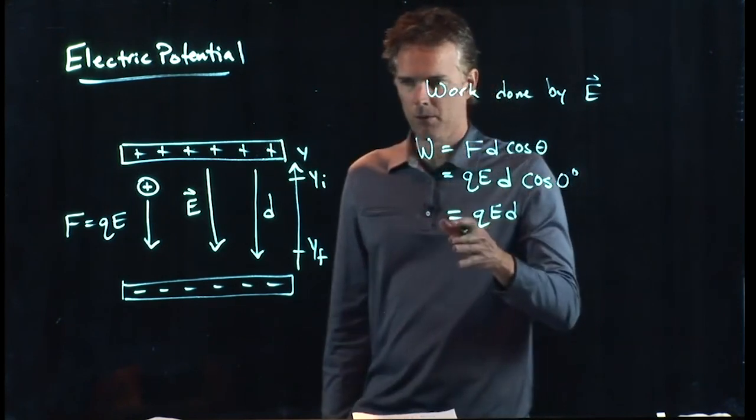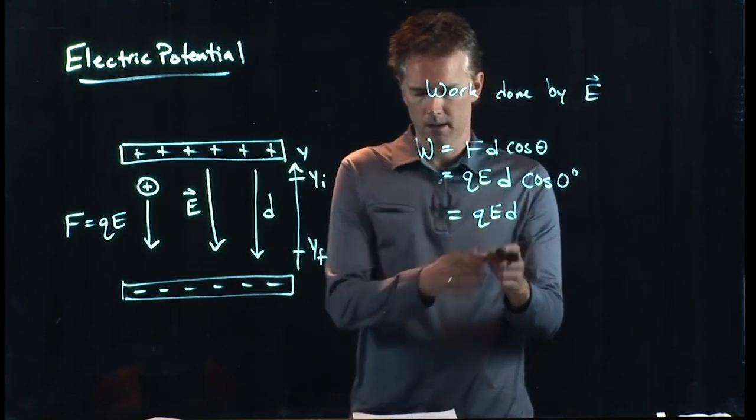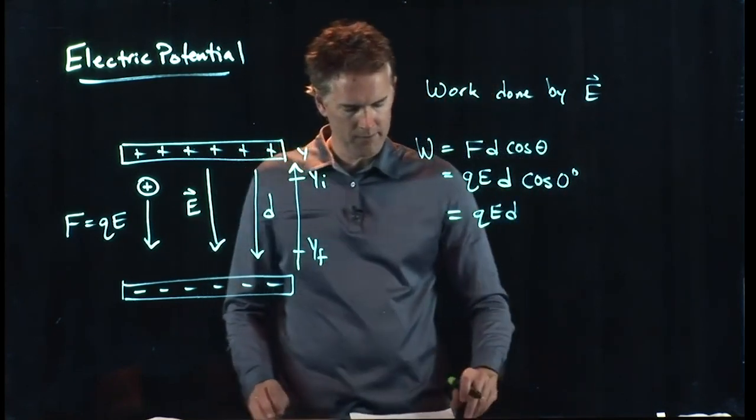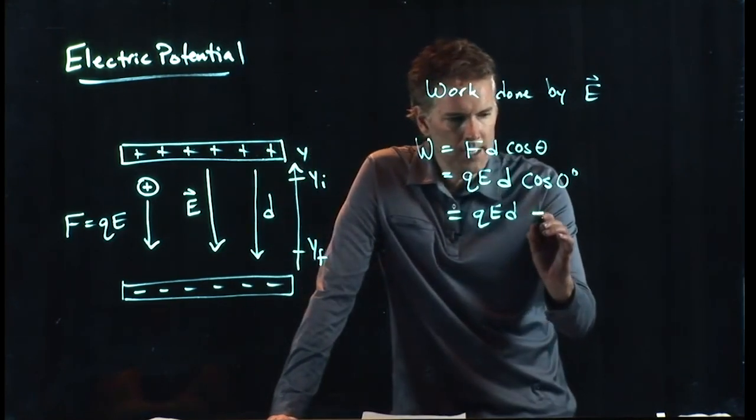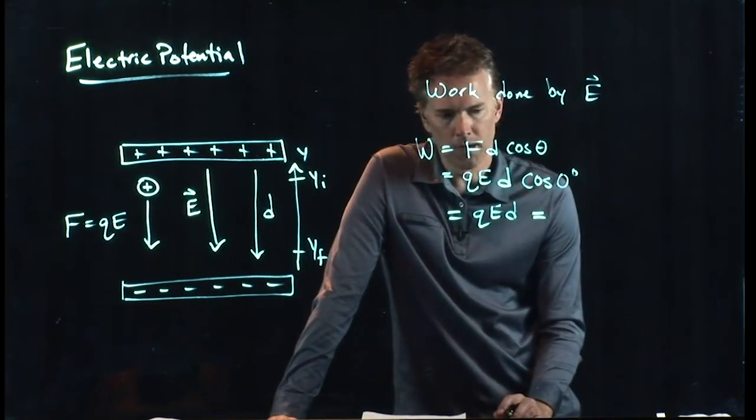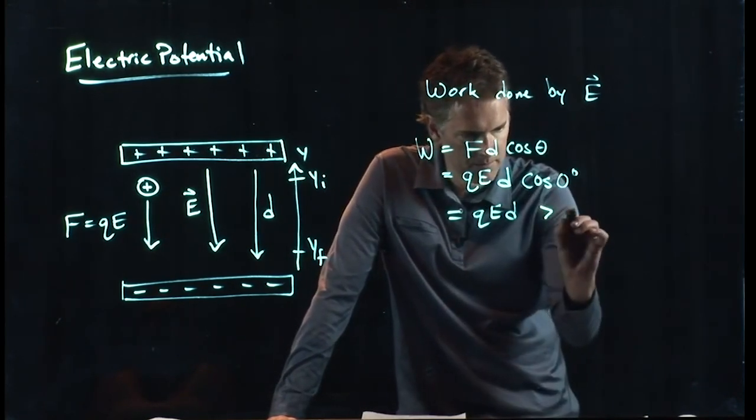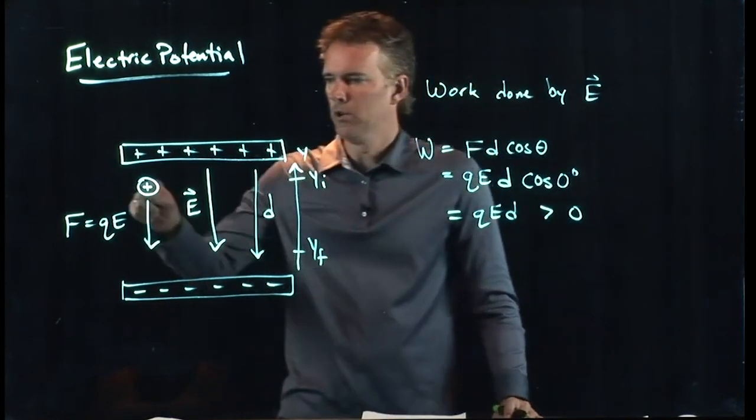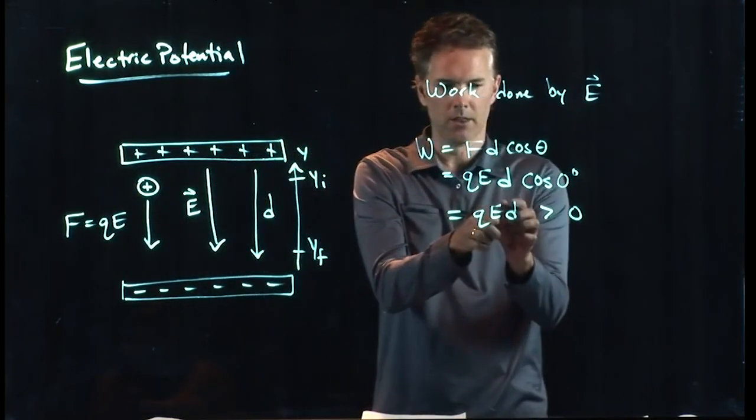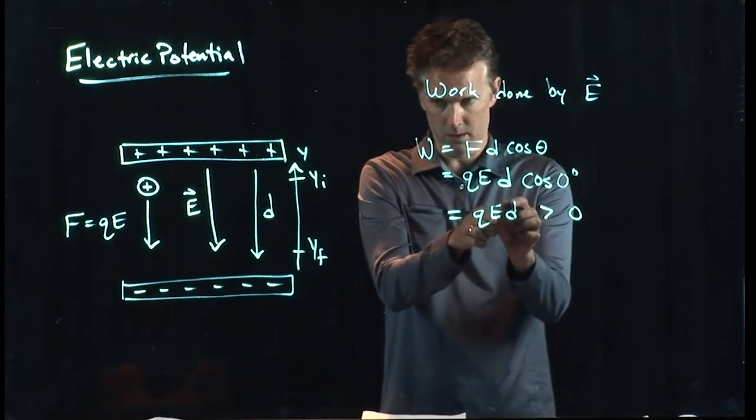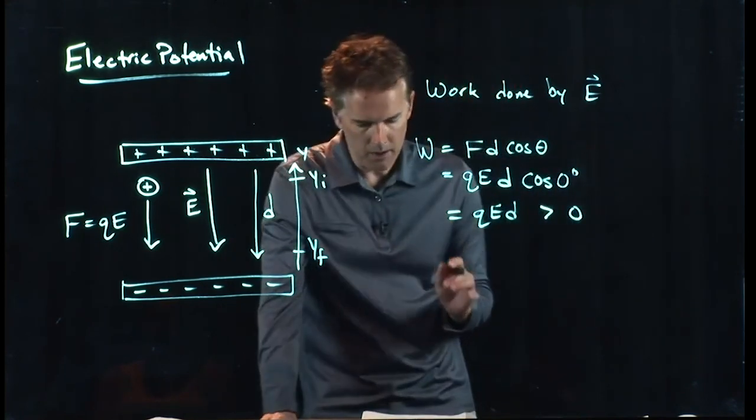It looks very similar to what we had before. In gravity, we had work was equal to Mg times D. So everything that we just did, we can take advantage of, and write this out as the following. Q, E, D is a positive number. Q is a positive number. E, D are in the same direction. These are magnitudes in this equation. And so this is a positive number, just like we had with the gravity.